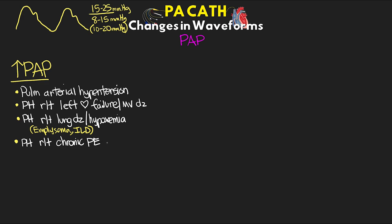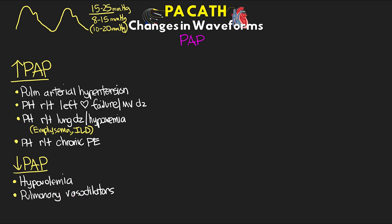For causes of decreased PA pressure: hypovolemia is potentially a cause, as are pulmonary vasodilators. Right heart failure can also cause this — if the right heart isn't ejecting much blood, we won't have high pressure. Additionally, an obstruction like a PE can potentially reduce our PA pressures as well.